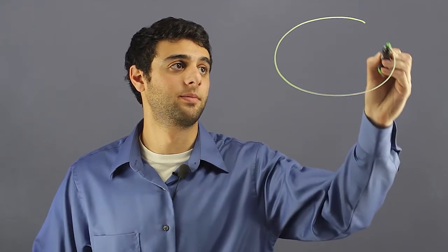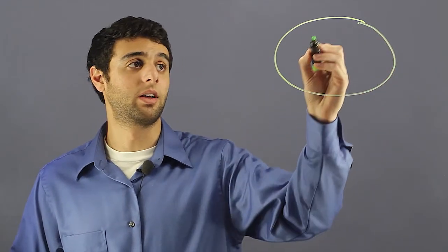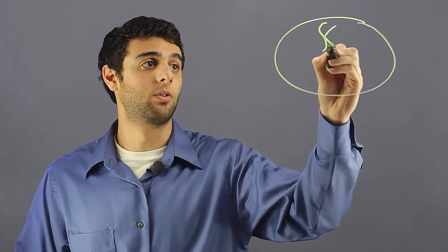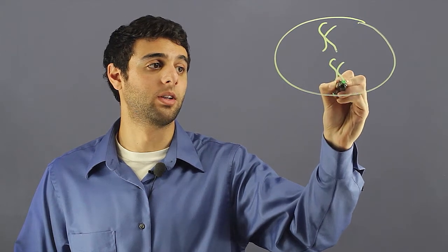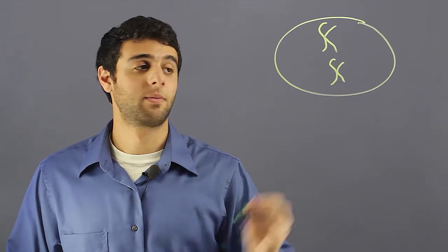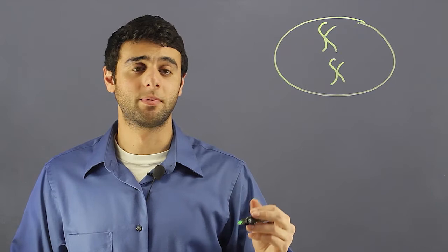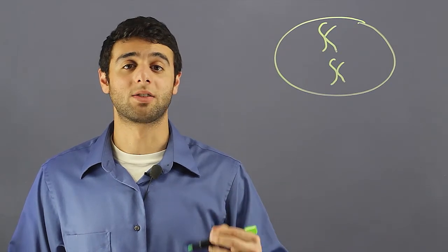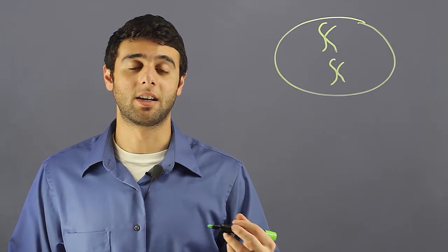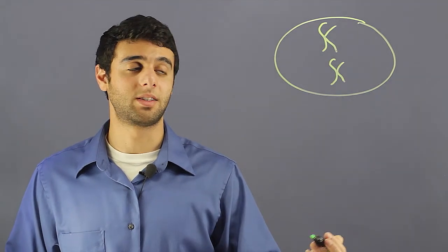Here we have a cell that's ready to divide, so we have one of the most important components, which is the chromosome. The chromosome contains all the DNA, and it's the thing that's being duplicated and split into two different cells.